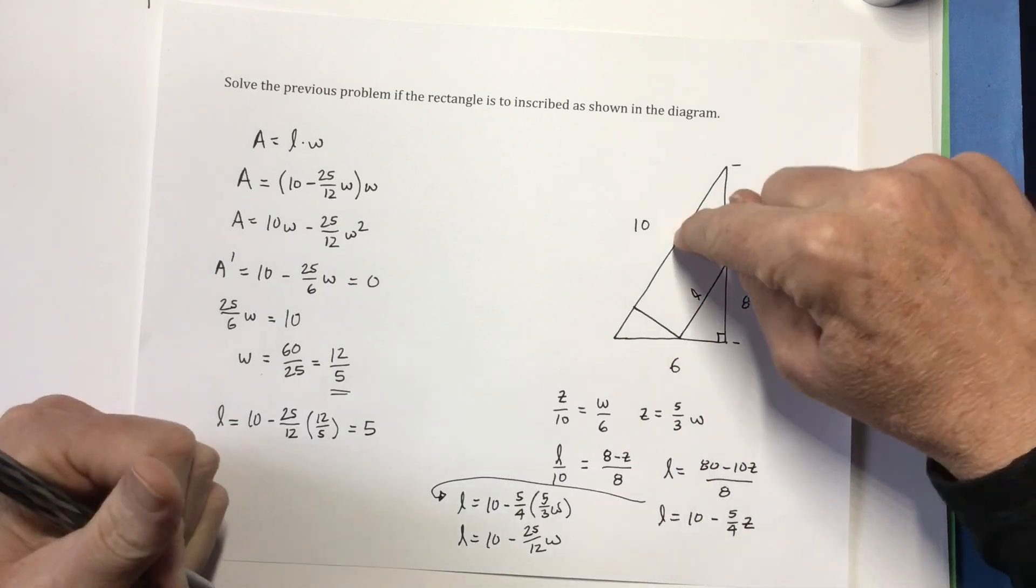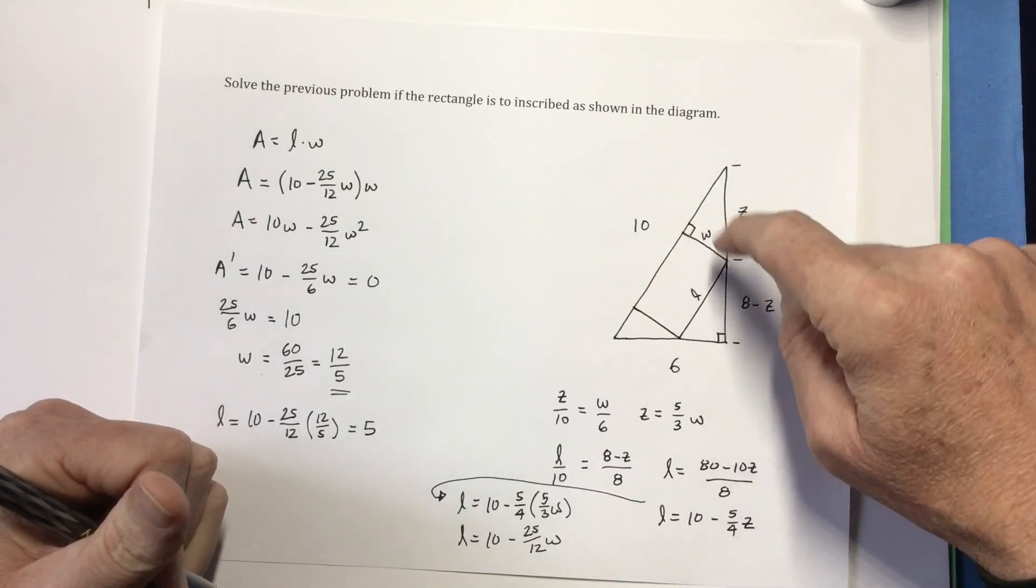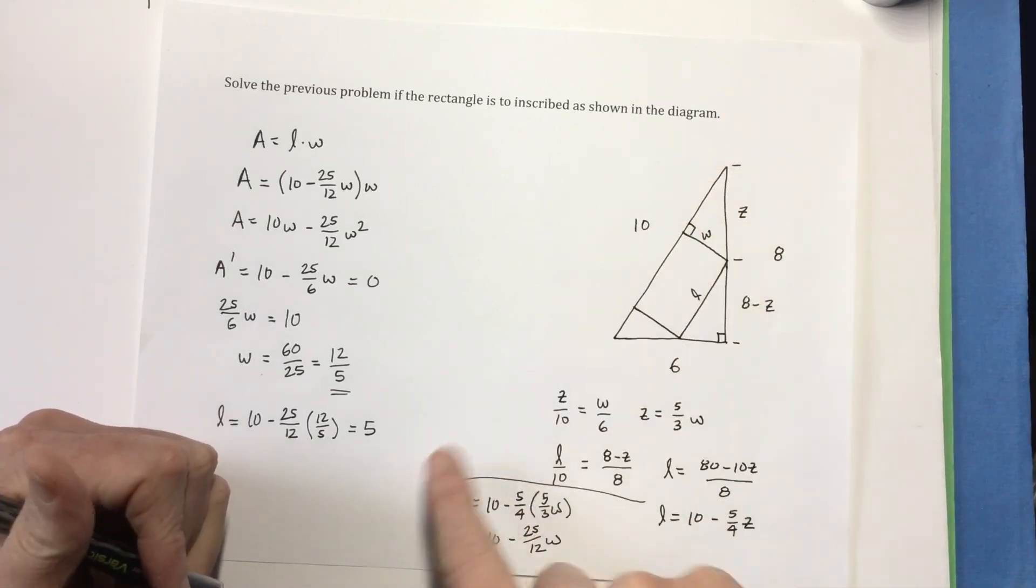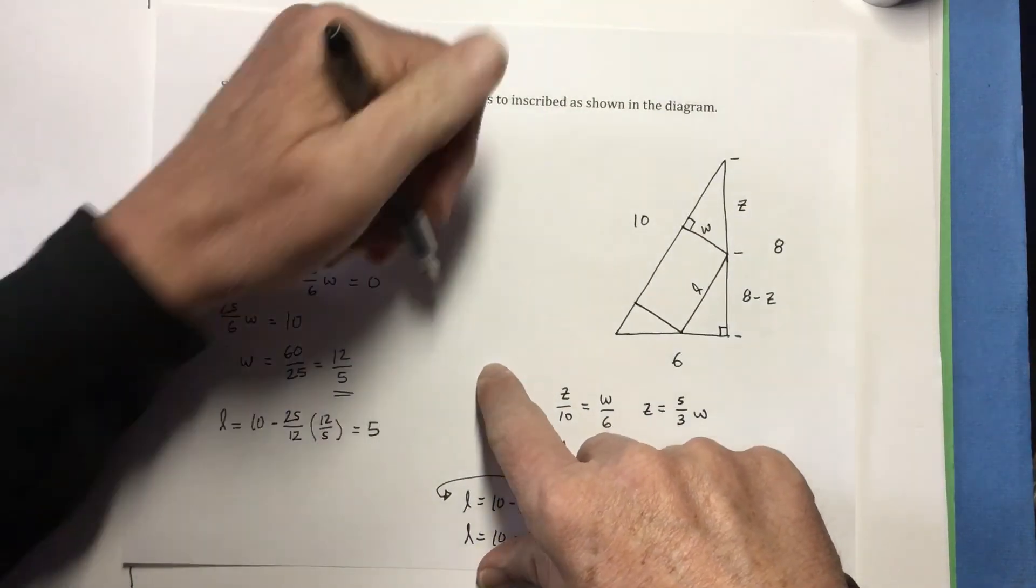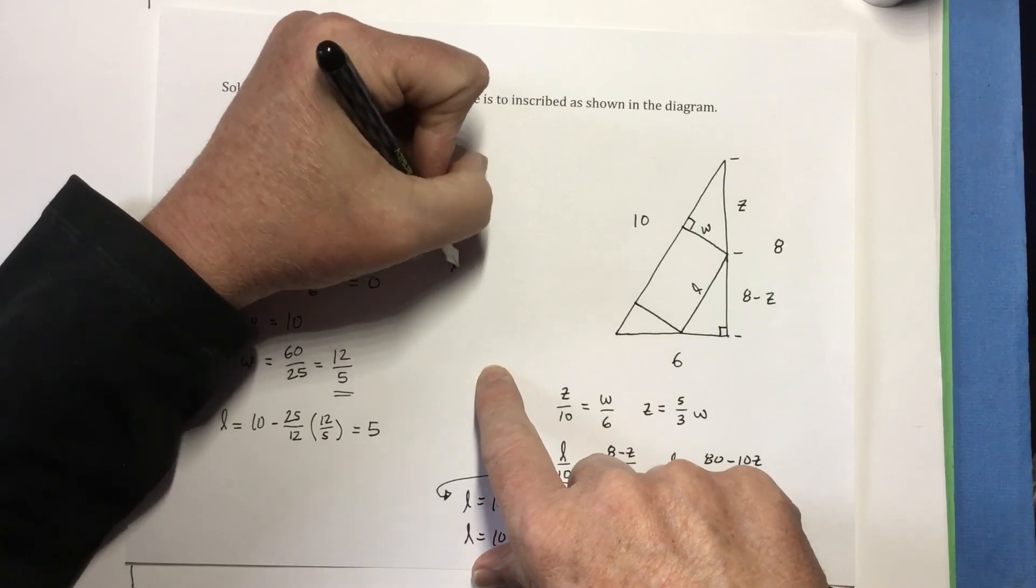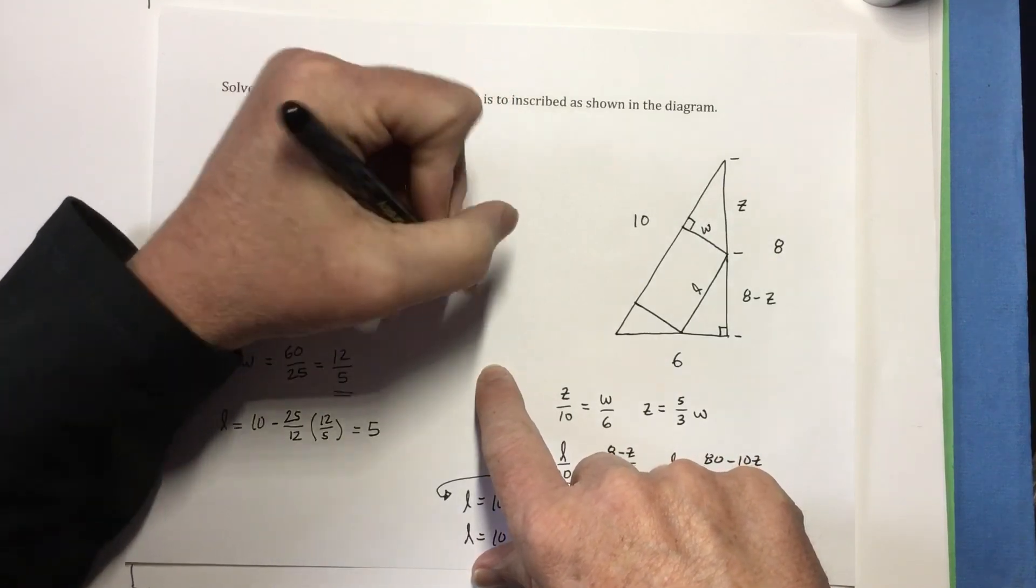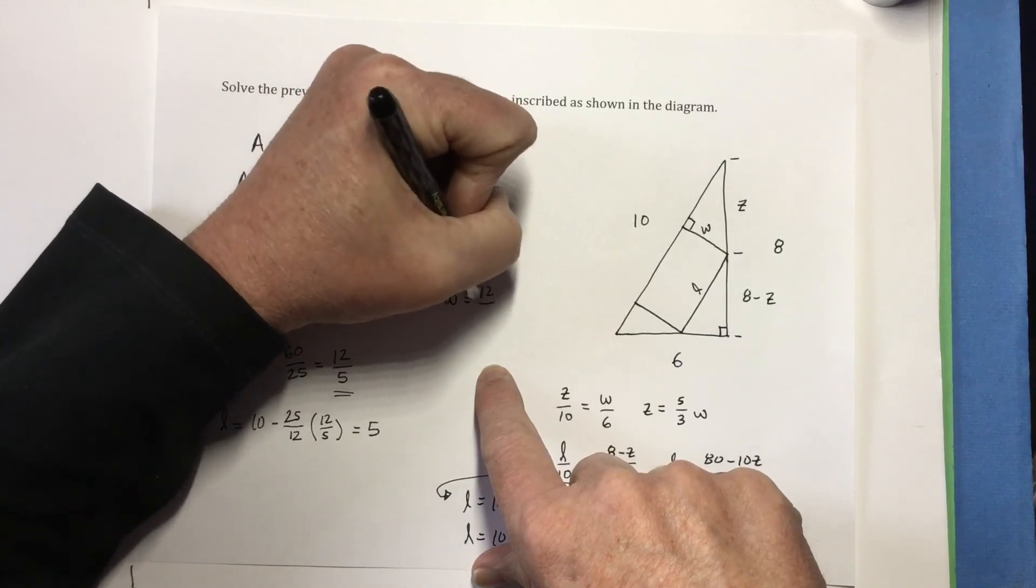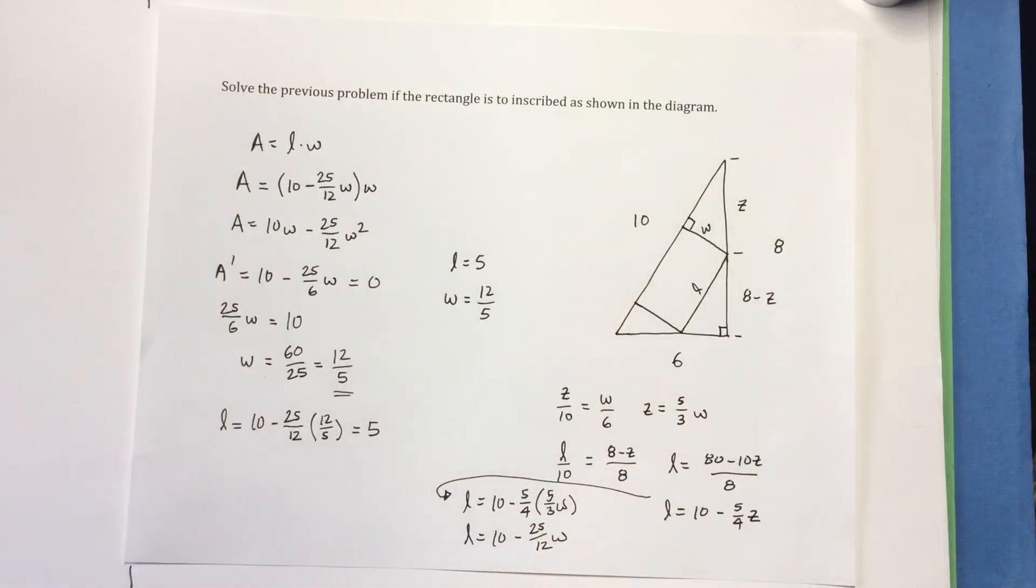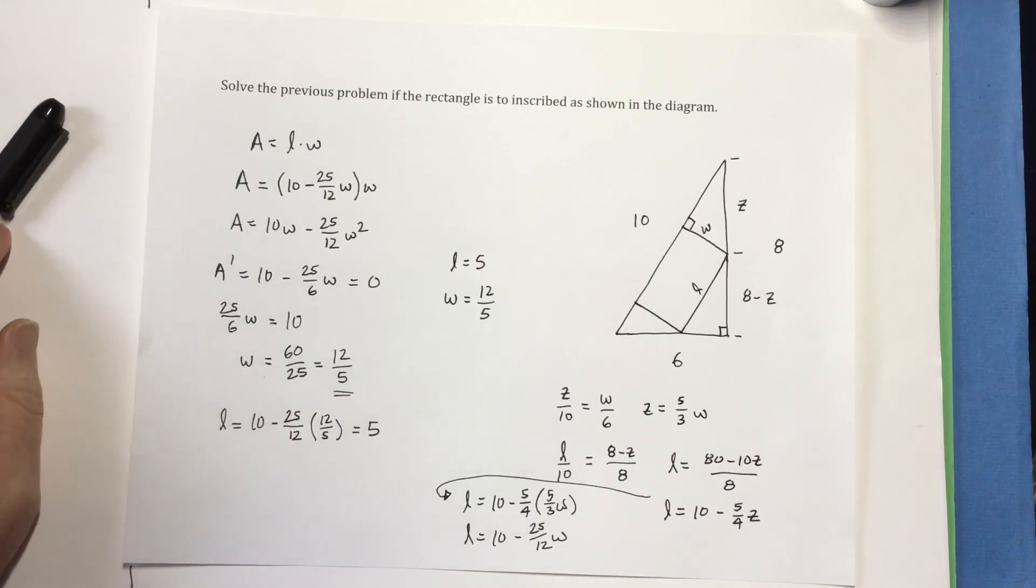So, that means that the maximum area of the rectangle I can inscribe in that triangle, in that position, will have a length of 5 and a width of 12 fifths. All right. Very good. Thanks.